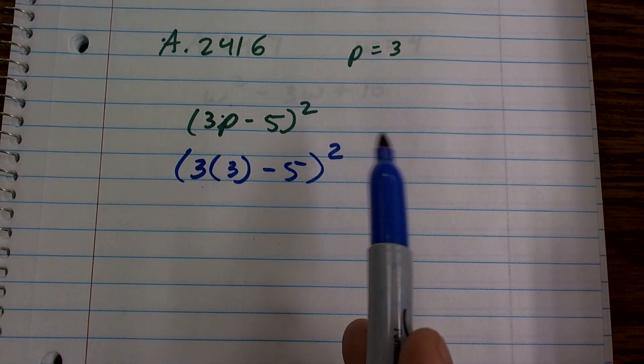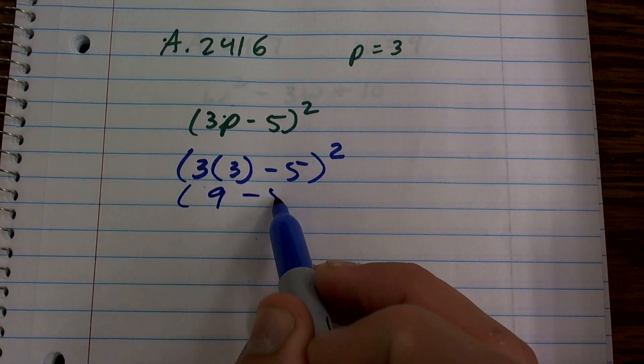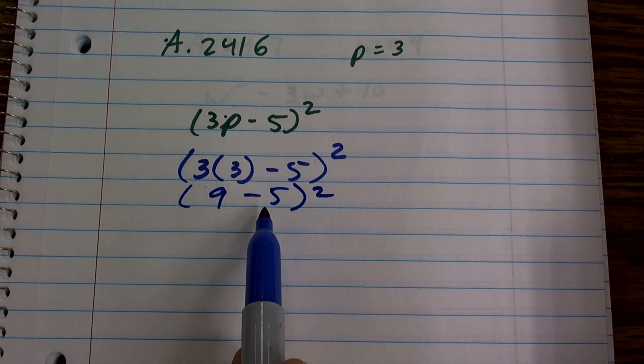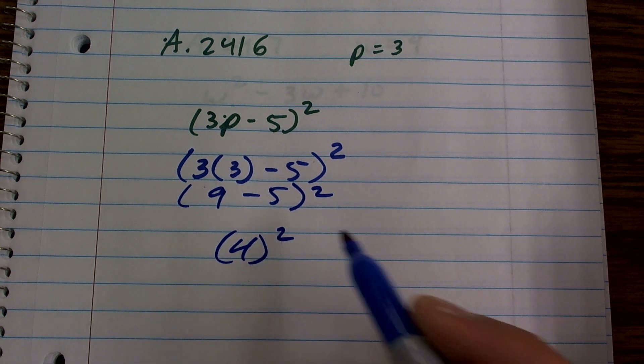Then I look for multiplication and division, which of course I have multiplication, so I'm going to do that. 3 times 3 is 9 minus 5 squared. Again, I can still do operations within the parentheses. 9 minus 5 is positive 4 squared.